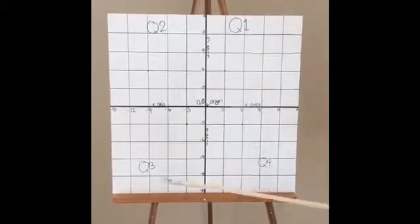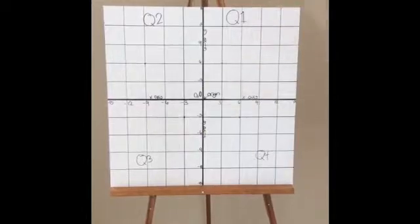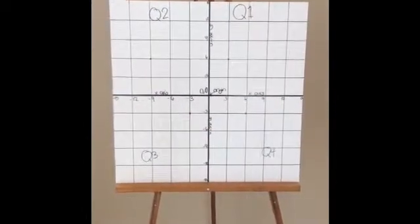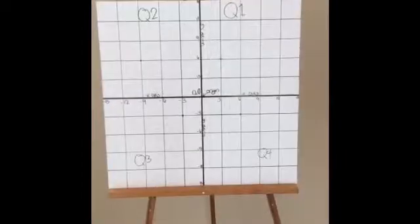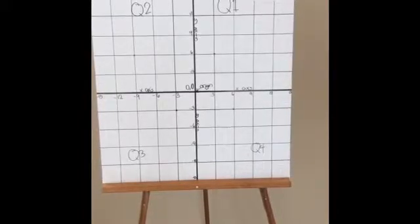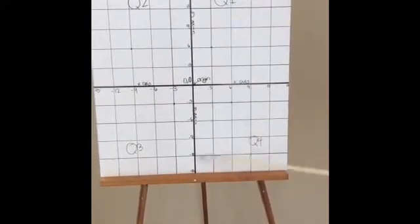The third quadrant is Q3. It contains the negatives from the y-axis and the x-axis, so it's all negatives. The last quadrant is Q4. It contains the positives from the x-axis and the negatives from the y-axis.